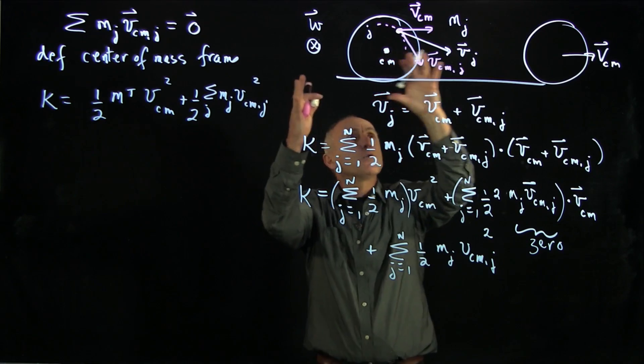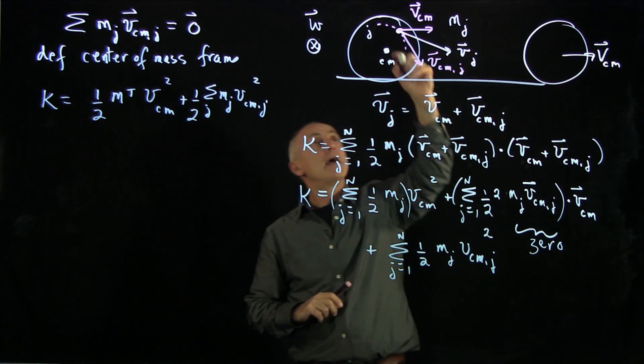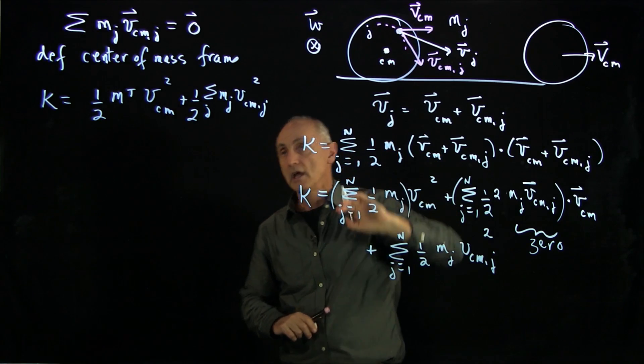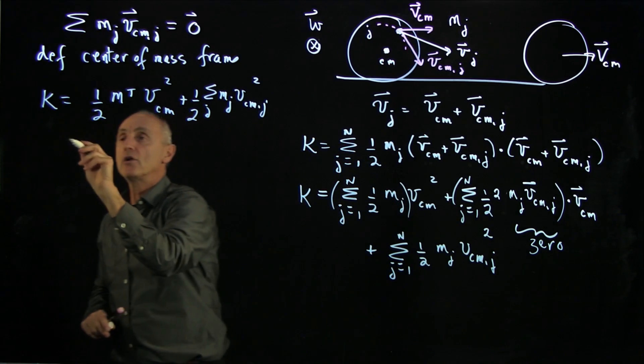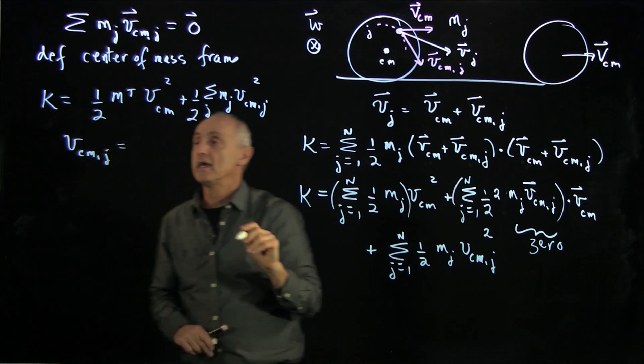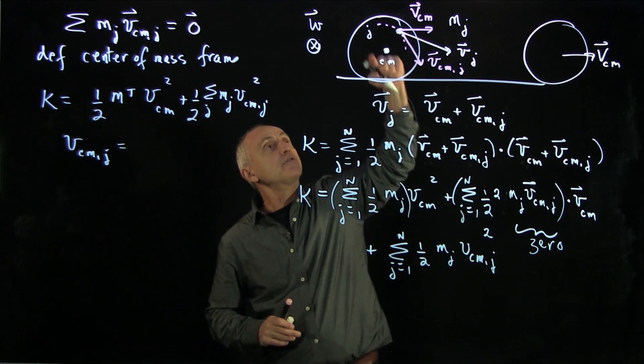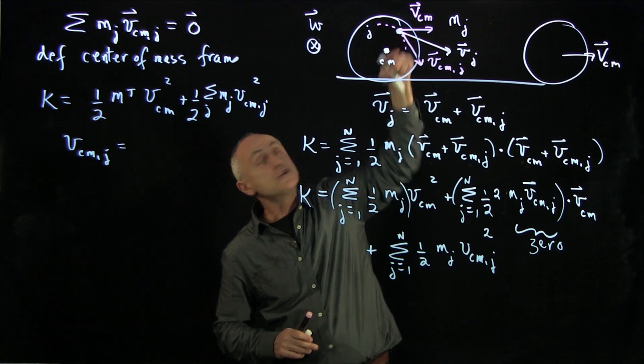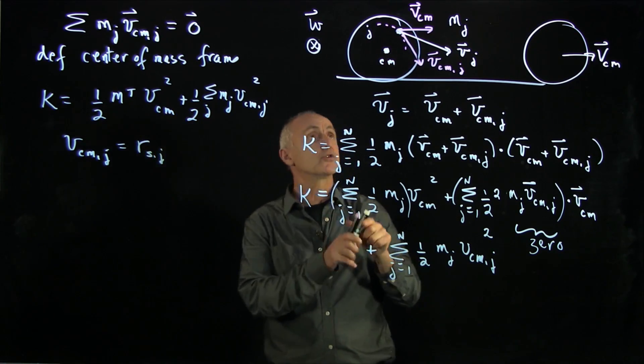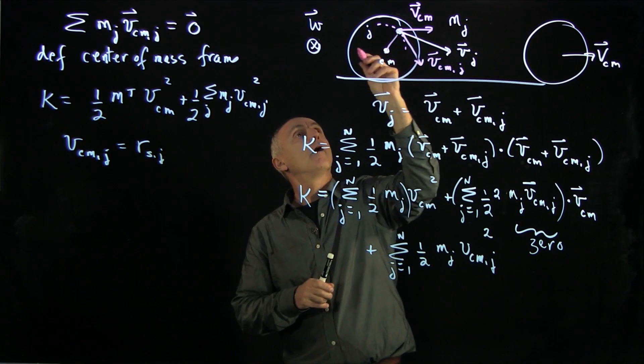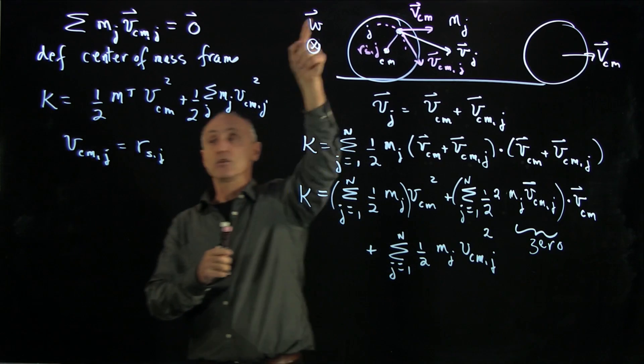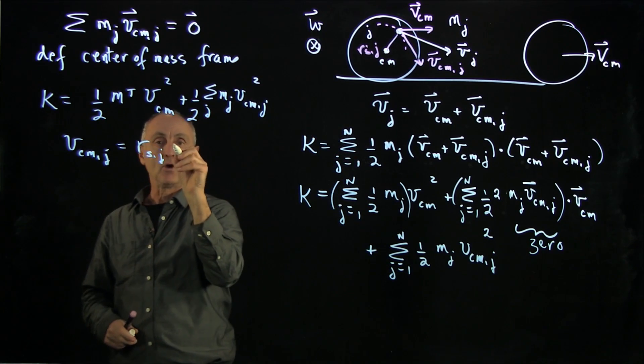Now, if you were moving with the center of mass, then this j-th object is just undergoing circular motion. And so we have our result that we've used many times is that the velocity, the tangential rotational velocity, is just equal to the radius rsj. So let's introduce that rsj times the angular speed omega.